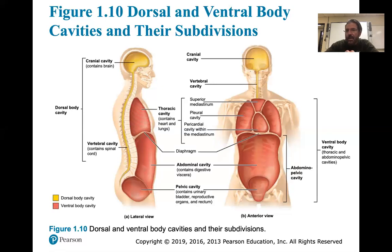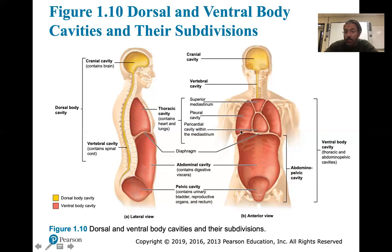I specifically remember on my first A&P exam, our instructor gave us a body diagram and we literally had to draw in what organs were in certain areas. I remember being upset because I got something mixed up — I may have put the liver where a lung was. I thought I knew it and clearly didn't.